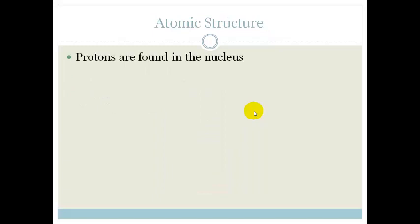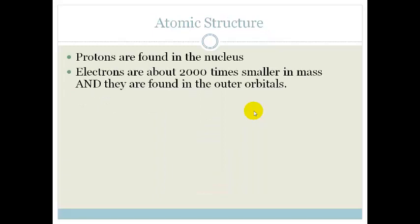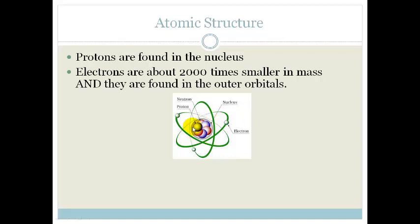We know that protons are found in the nucleus. The electrons are about 2,000 times smaller in mass and they are found in the outer orbitals. I know this isn't to scale, but in the inside, in your nucleus, you've got your protons and neutrons. And then you've got these electrons in the outer orbitals.